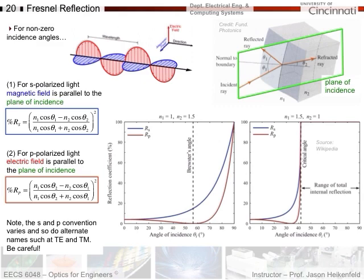This is for going from low to high refractive index. Going from high to low refractive index, you can reach total internal reflection at a large enough incidence angle. Be careful with terminology — people use S and P, or TE and TM, and don't always use them clearly. Always trace it back to the underlying principles to understand what's meant.